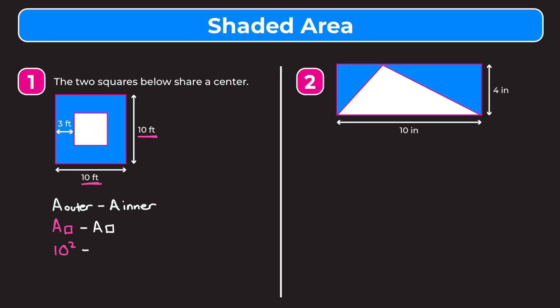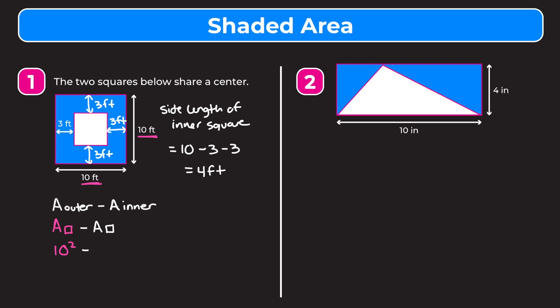Now we have to find the area of the inner square. They don't give us the side lengths of this inner white square, so we have to find that ourselves. Because these two squares share a center, this border is going to be three feet all around — on all four sides. To find the side length of the white square, we take the outer side length of 10 feet and subtract three feet twice: 10 minus 3 minus 3 equals 4. So the side length of our inner square is 4 feet.